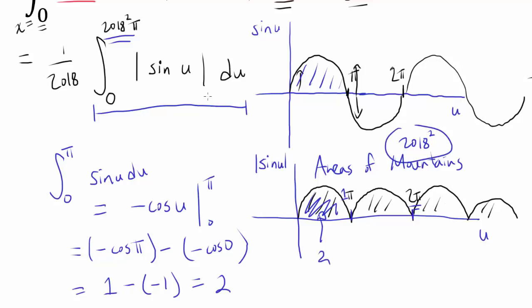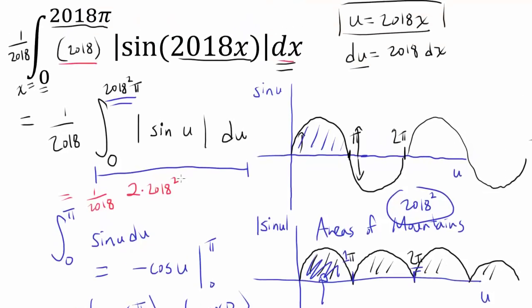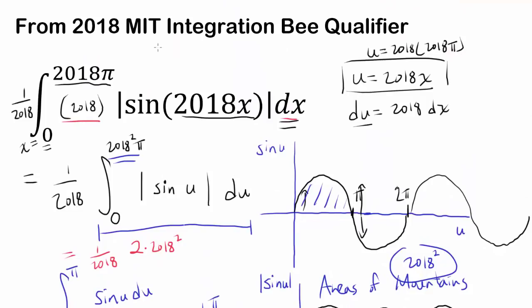We have 2018 squared of them. So this entire integral evaluates to 2 times 2018 squared. But we gotta remember, we're dividing by 2018 as well. So our final answer is 2 times 2018 squared over 2018. Or 2 times 2018. So we can cancel this out to get 2018. Or 4036.